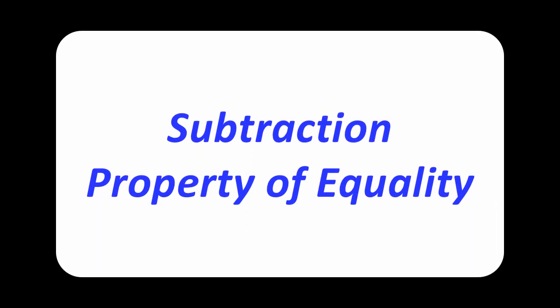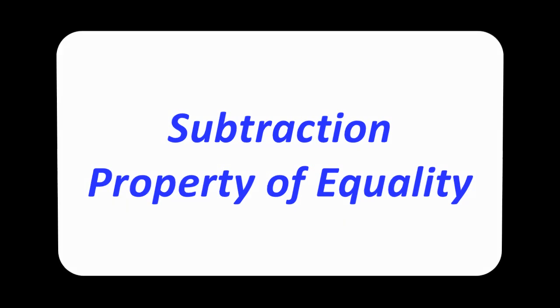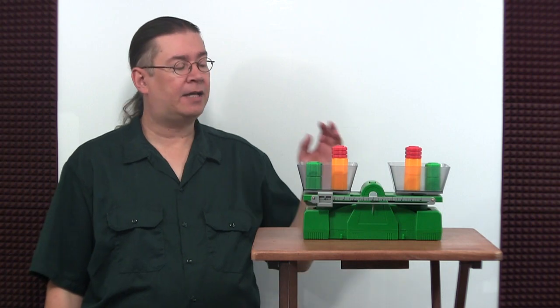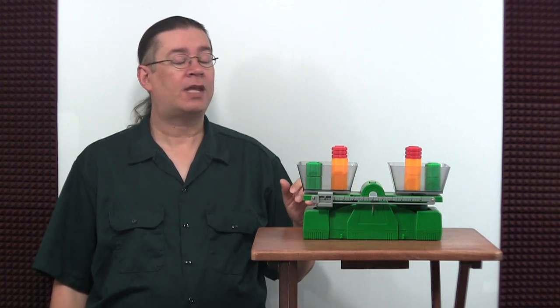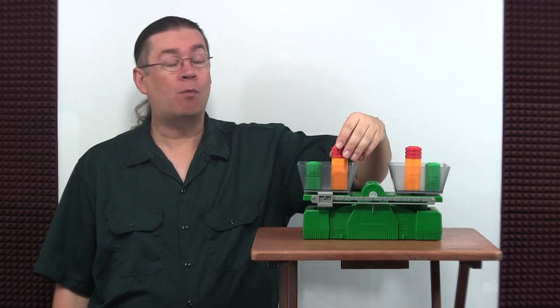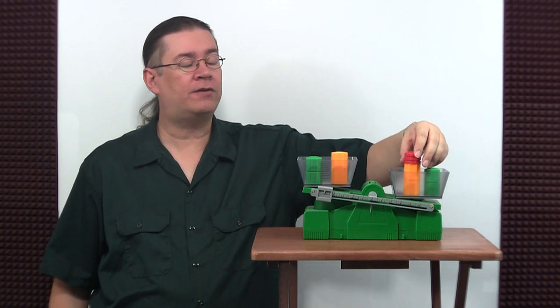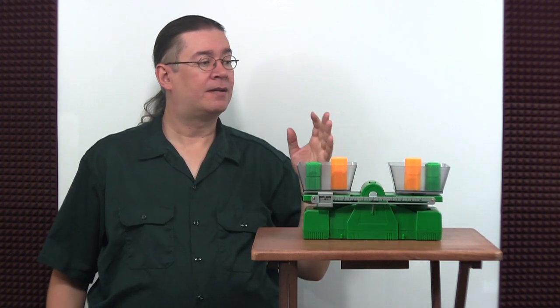Subtraction property of equality: we can subtract equal values to both sides of an equation to create an equivalent equation. To illustrate this property of equality, let's take a look at a set of scales or balance. If we subtract or remove a certain amount of weights from one side of the scales, they're no longer equal, so we have to remove the same amount of weights from the other side. Now the scales are balanced again.